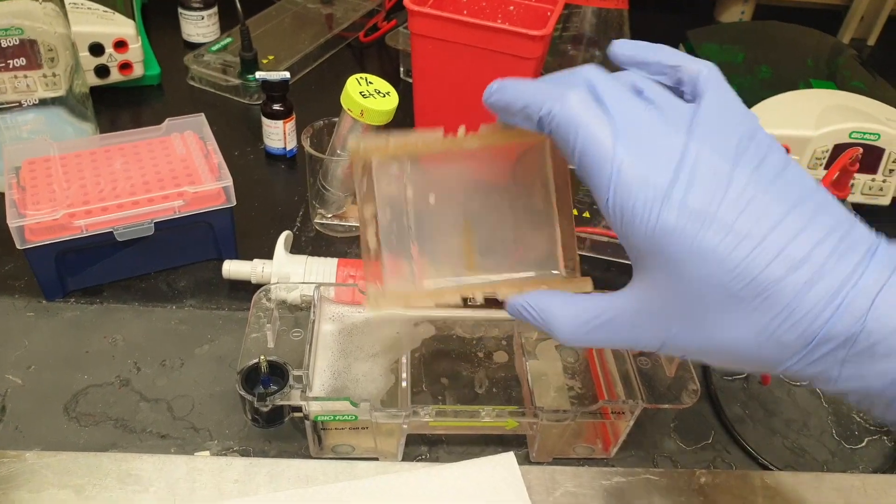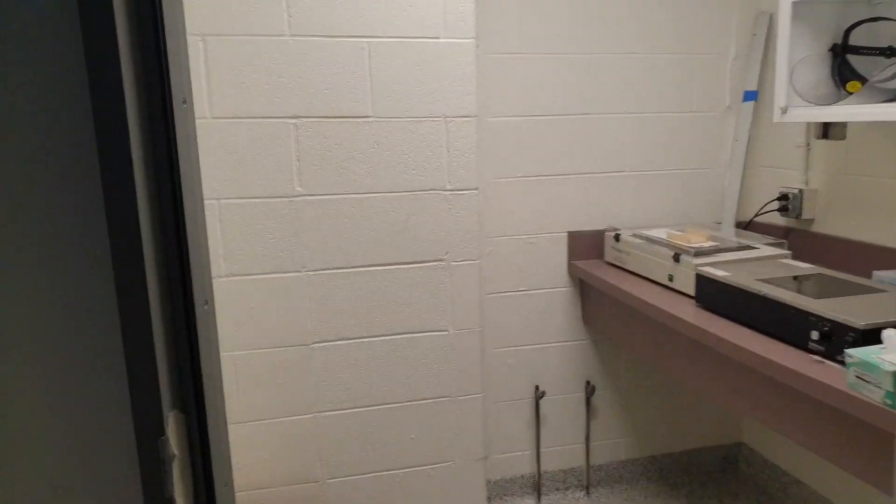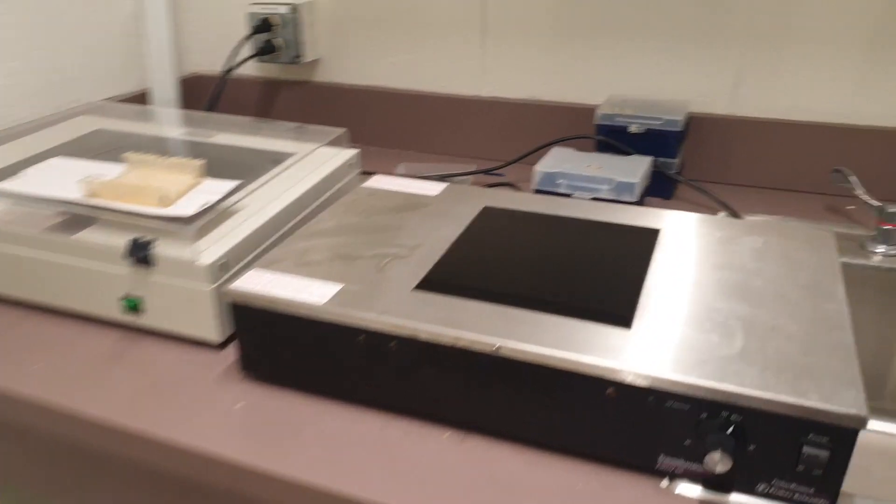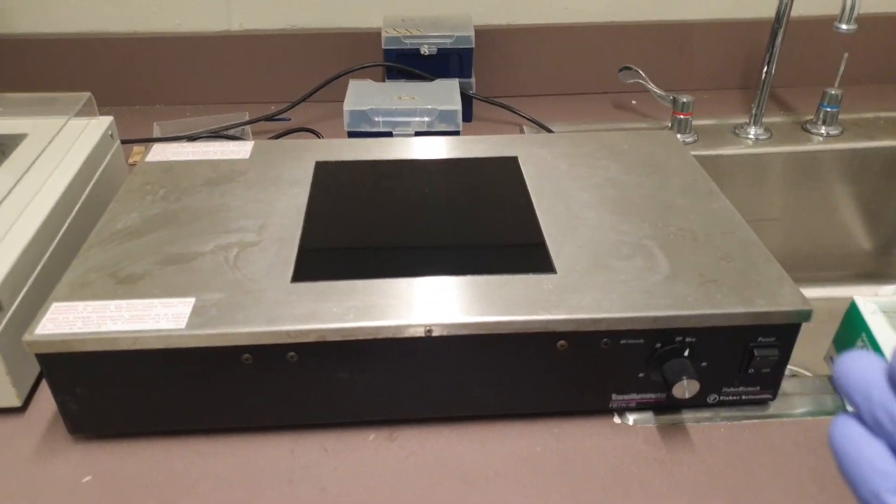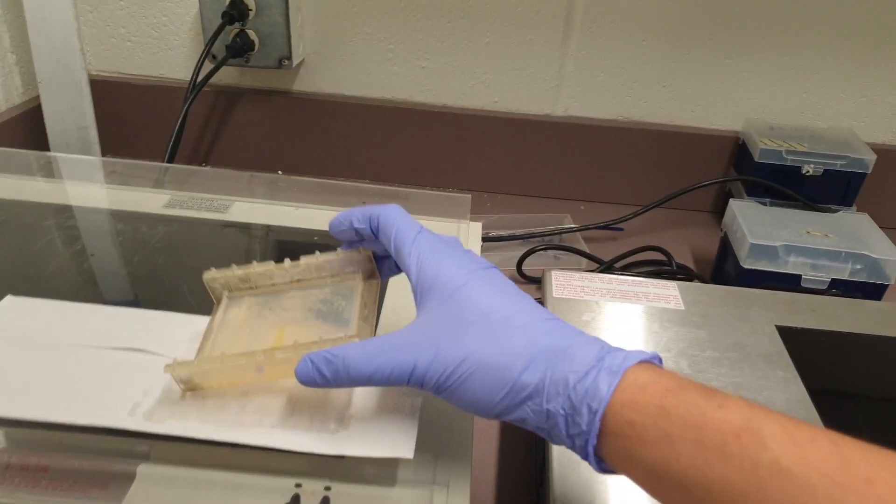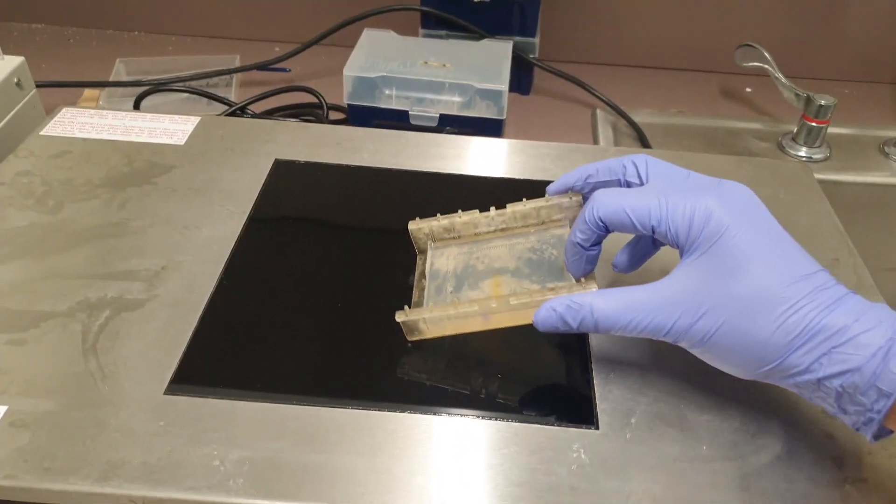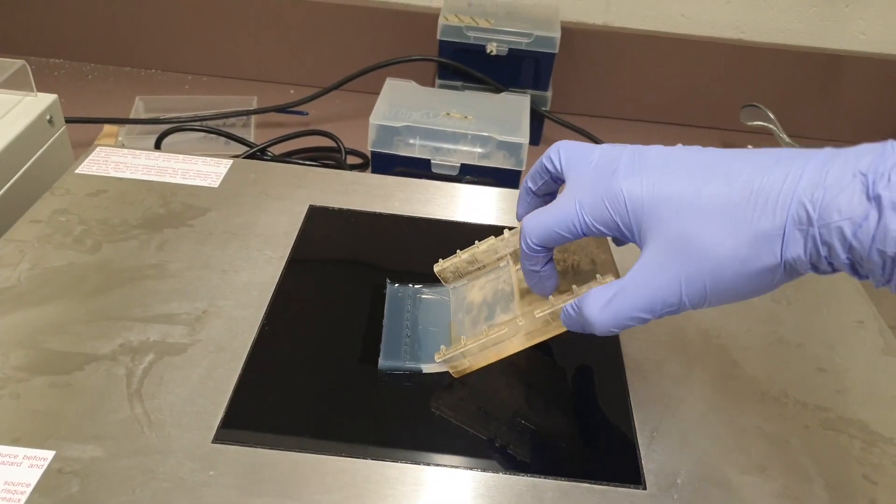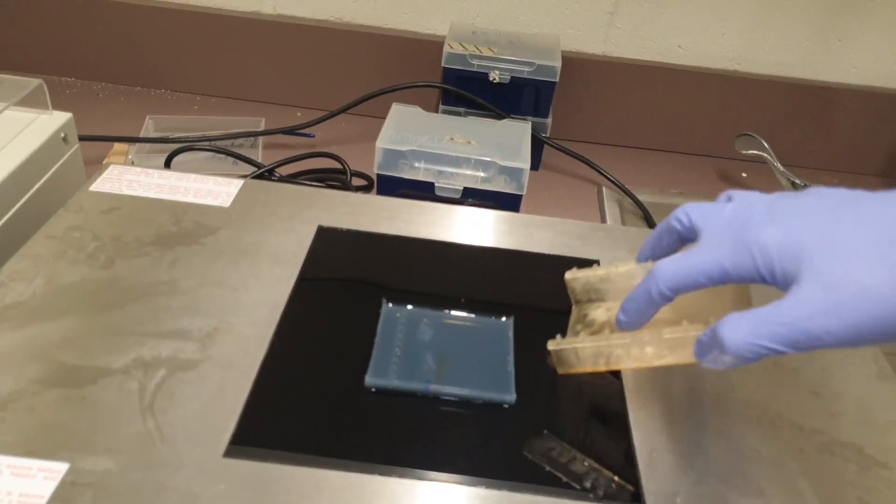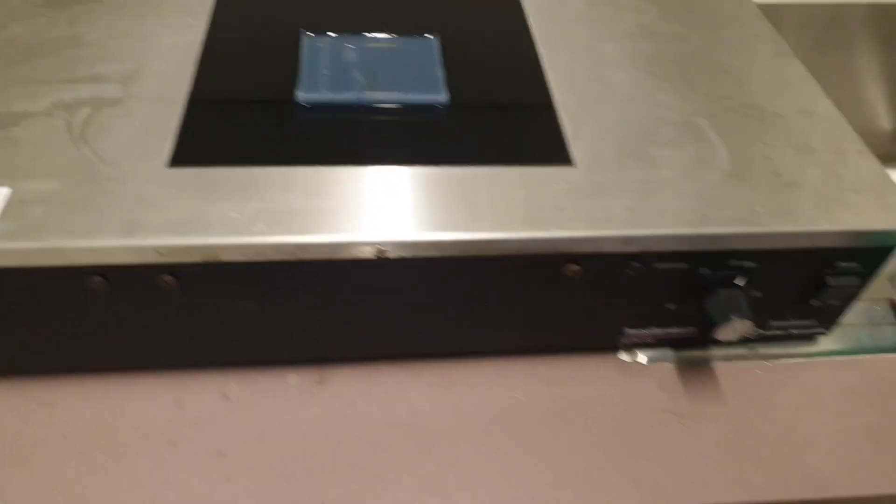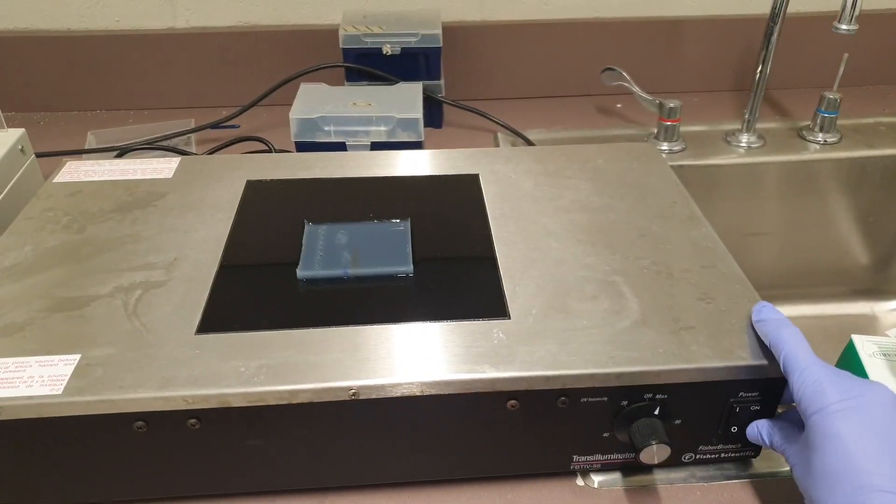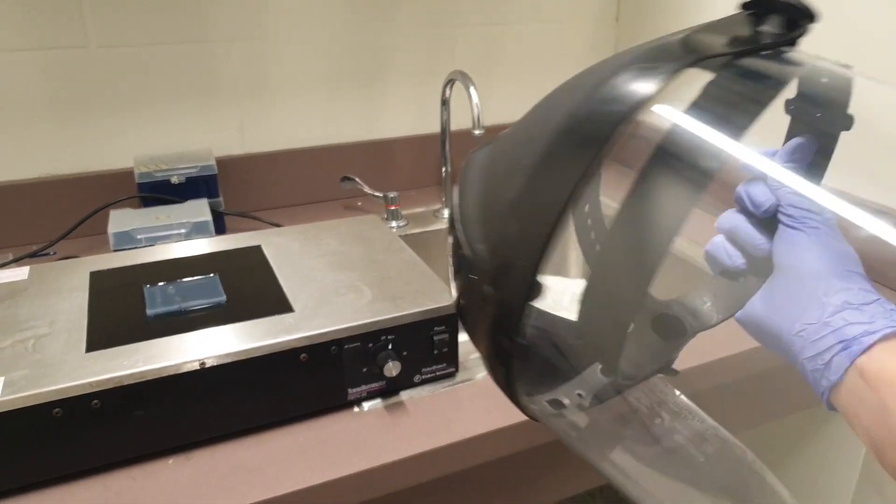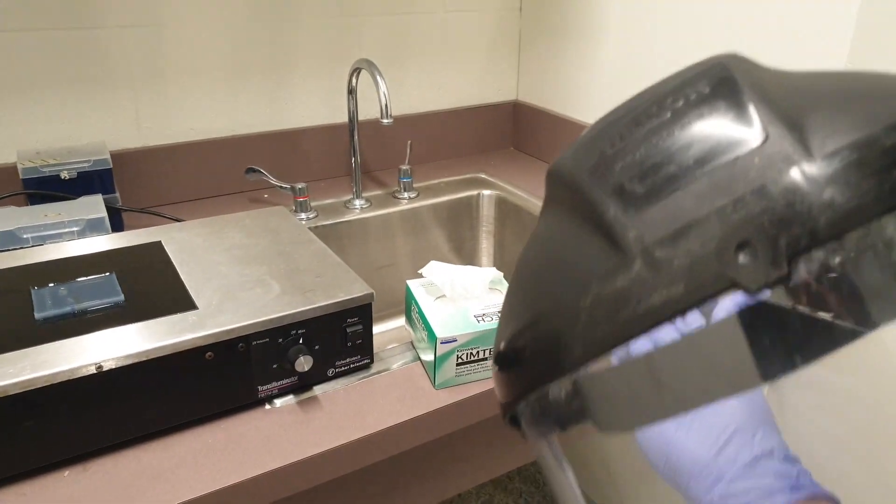Now we'll take this plate to the darkroom. Alright, so now we're in the darkroom. This is the UV box we're going to use. Let's slide our plate on top of it. Let's be careful because this is quite fragile. Once we turn this on, it's going to create this purple light. But before doing that, we need to use these UV protection shields.